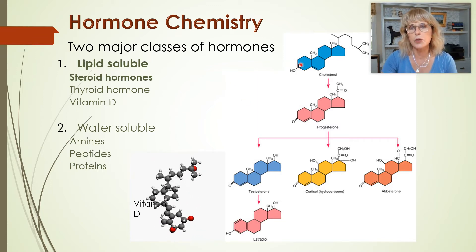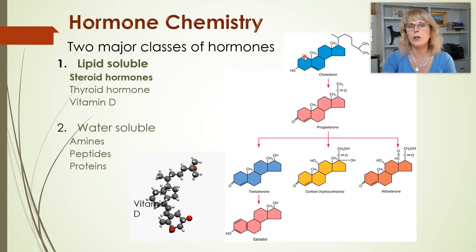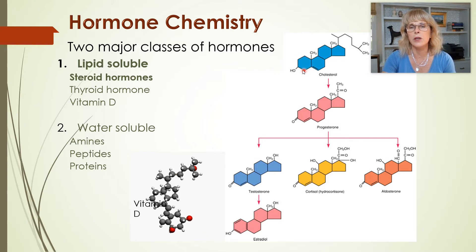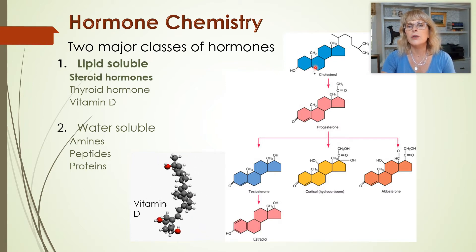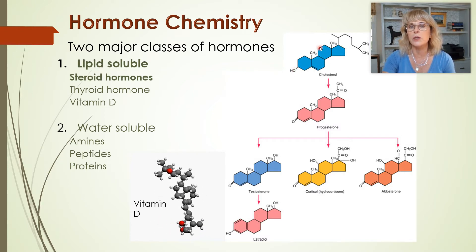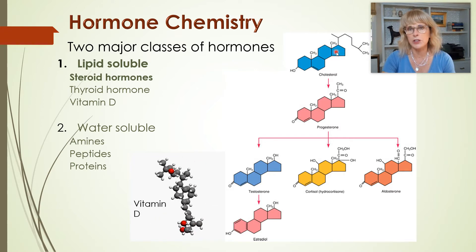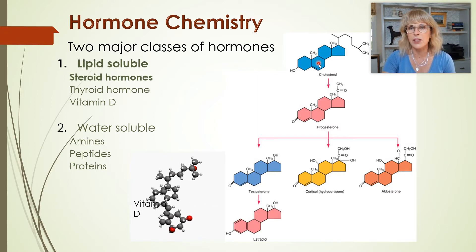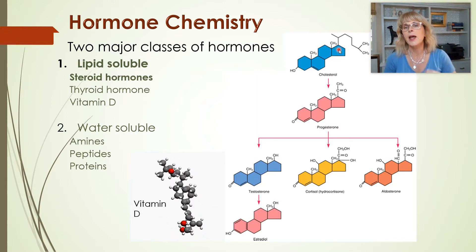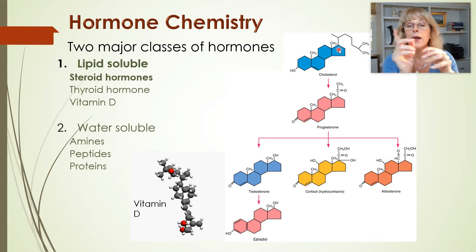Steroid hormones are hormones that have the chemical structure of a steroid ring. That chemical structure is this — everywhere there's a corner, there'd be a carbon. So that is a six-sided ring of carbon, here's another six-sided ring of carbon, here's a third hexagon of carbon, and here's a pentagon of carbon. That is what makes that molecule a steroid molecule.